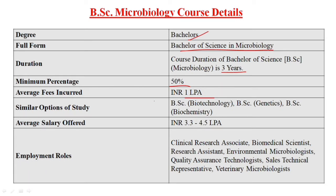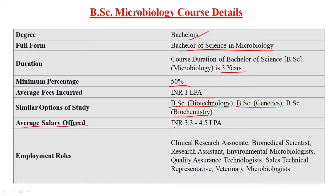Similar course options are BSC Biotechnology, BSC Genetics, and BSC Biochemistry. The average salary offered is 3.3 lakh to 4.45 lakh per annum.